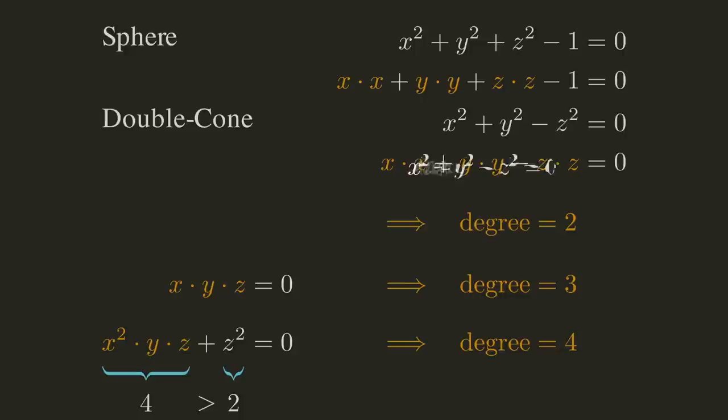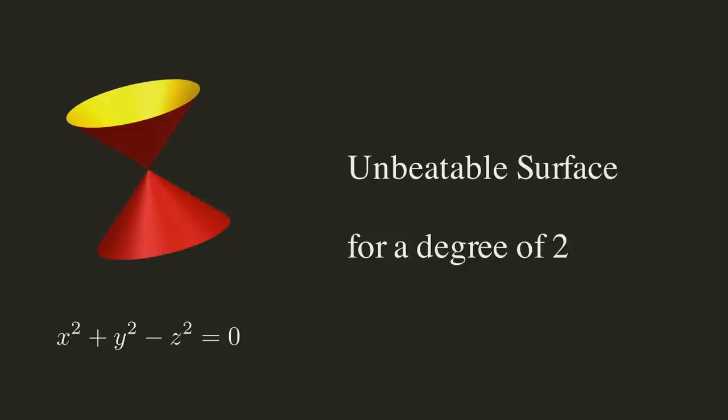As it turns out, the double cone is already a world record surface itself. As it turns out that you cannot have more than one singularity for degree two. But what about higher degrees?